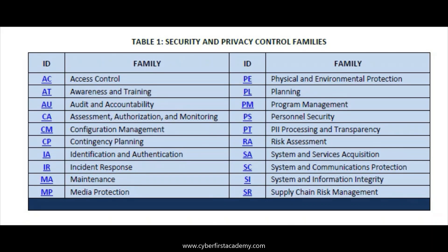Here are the Cybersecurity NIST 800-53 Revision 5 Control Families. The security control families are listed here, and there are 20 of them. There used to be 18 in Revision 4, but Revision 5 now has 20.